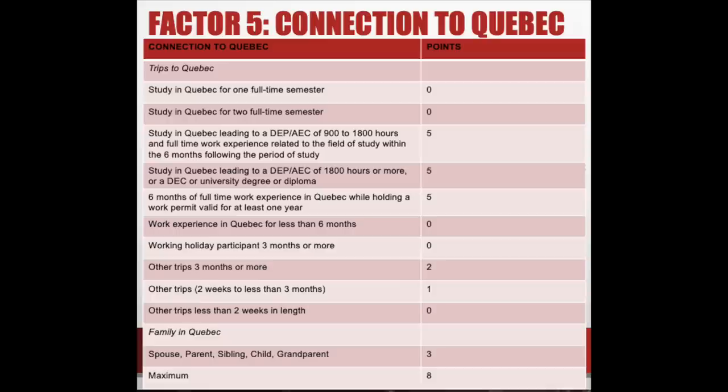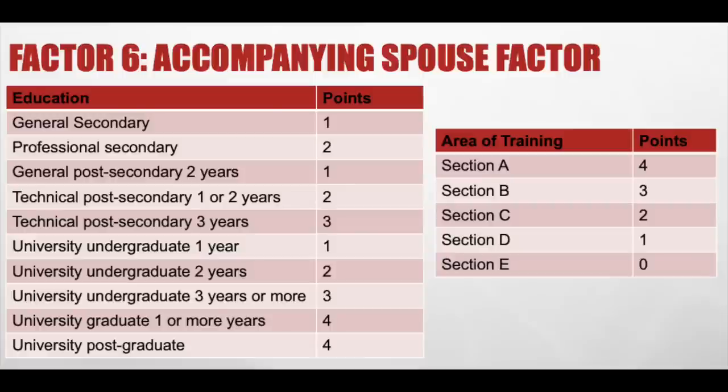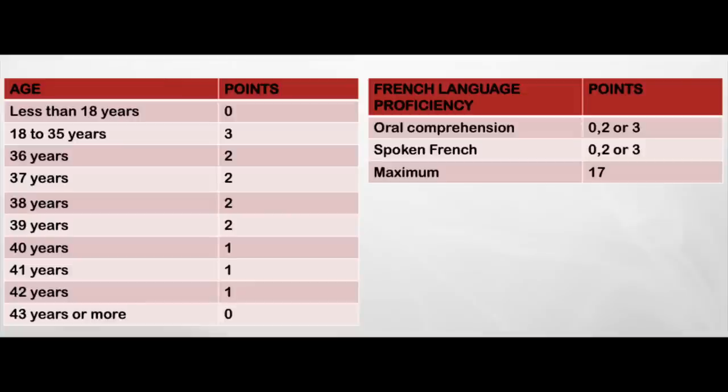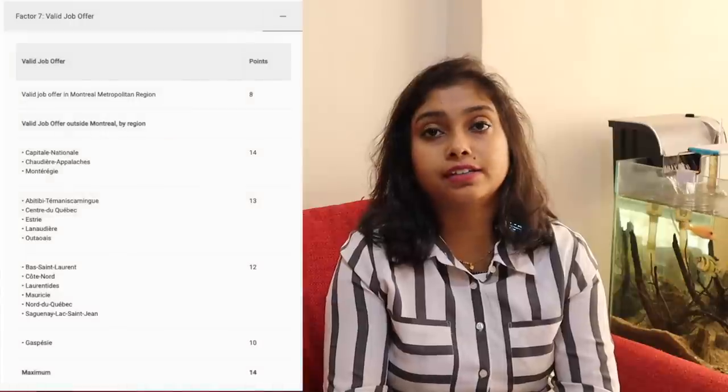Factor five is connection to Quebec. If you have studied, worked there earlier, or have family living there, you can prove your connection to Quebec. Factor six is spousal factors — on the basis of your spouse's education you can get up to four points, and based on areas of training you can add more. On the basis of your spouse's age (18 to 35) you get a maximum of three points, and French language proficiency adds up to three more points. Factor six gives a maximum of 17 points.